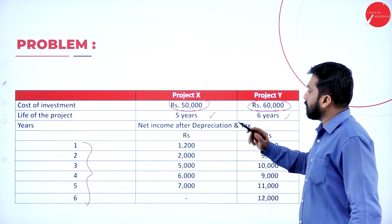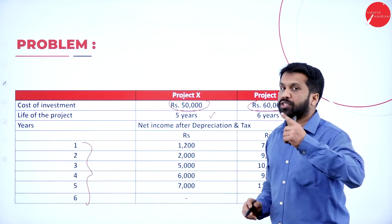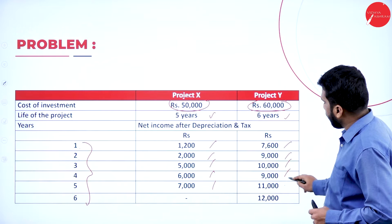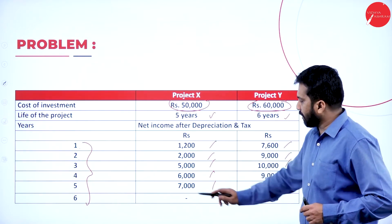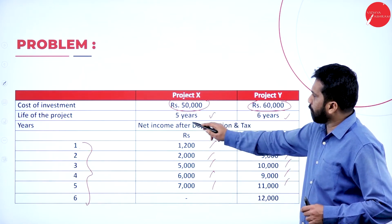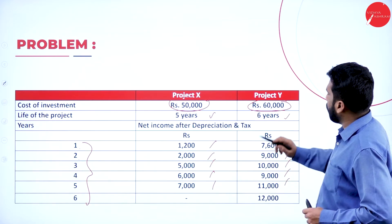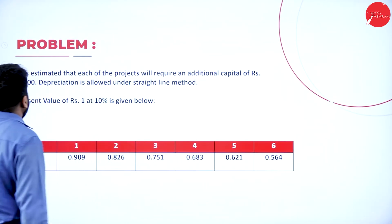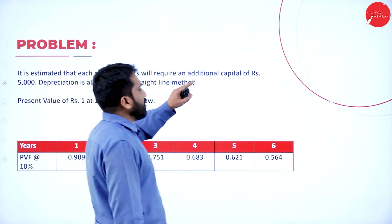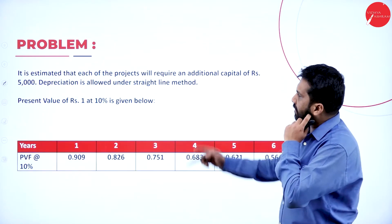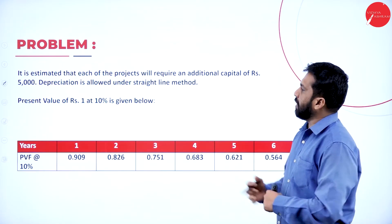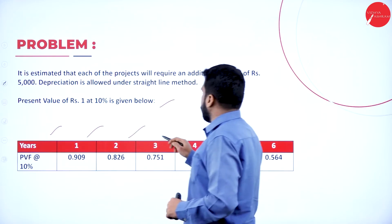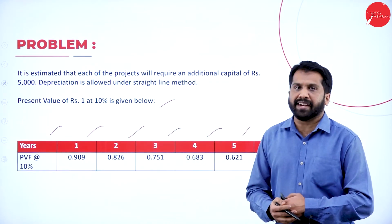Net income after depreciation and tax is given — this is your final answer after deductions. It is estimated that each project will require an additional capital of rupees 5,000. Depreciation is allowed under the straight line method. Present value of rupees 1 at 10% is given for years 1 through 6. Directly we will go for NPV calculation — but before NPV calculation, we need to handle the profit after depreciation and tax.